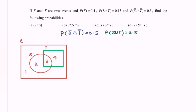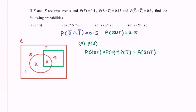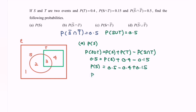For part A, we need to find P(S). Using the addition rule: P(S∪T) = P(S) + P(T) − P(S∩T). Substituting: 0.5 = P(S) + 0.4 − 0.15. Rearranging: P(S) = 0.5 − 0.4 + 0.15. Therefore, P(S) = 0.25.